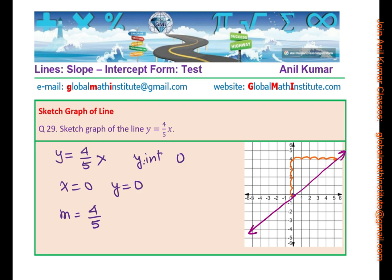You can check your line by going 5 down and 5 left. 4 down, 1, 2, 3, 4 down, and 5 left, 1, 2, 3, 4, and 5. Do you see that? It works. So it is same as minus 4 over minus 5.